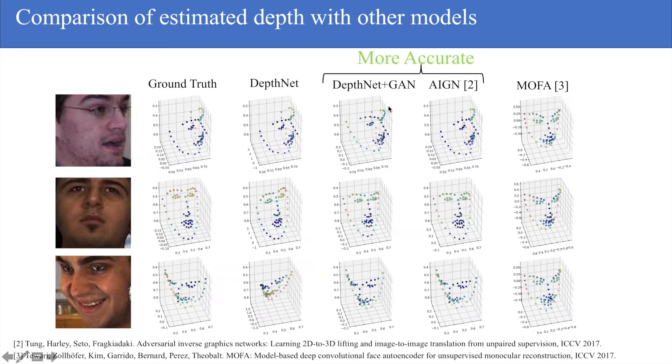As you can see, DepthNet plus GAN and AIGN give more accurate depth estimates. But of course, with DepthNet, there is no depth supervision required, which is key. For quantitative results, you can see the tables that we've presented in our paper.